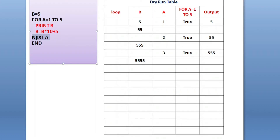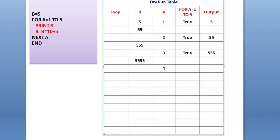Next a again — next a means increment the value of a. I'll go to the next line in the a column. The before value of a is 3, now this time it will be 4, because next a means a plus 1, that is 3 plus 1 = 4.